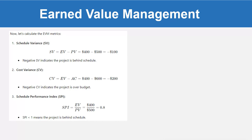Schedule Variance: SV = EV minus PV = 400 minus 500 = minus 100. A negative SV indicates the project is behind schedule. Cost Variance: CV = EV minus AC = 400 minus 600 = minus 200. A negative CV indicates the project is over budget.